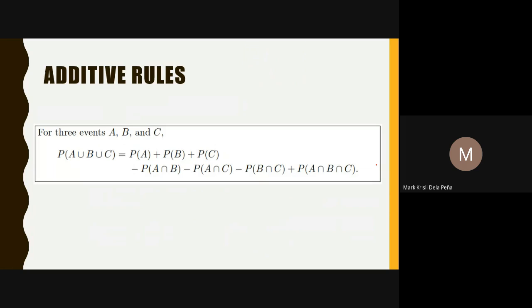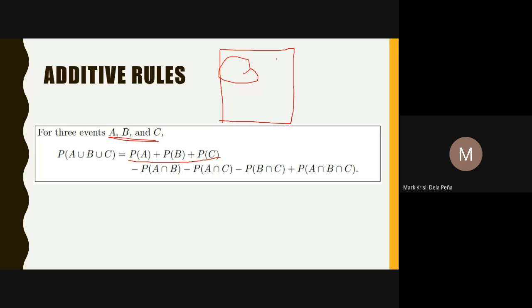For three events, the probability of their union equals the sum of each individual event's probability, minus the probability of the intersections of each pair, plus the probability of the intersection of all three events.